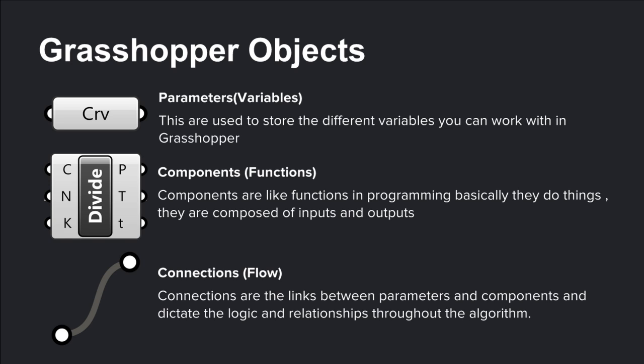The next one would be the components, which could be understood as functions, meaning they perform different operations. They are composed of a series of inputs which are computed to return an output. And finally we have the connections, which in the analogies we are making could be understood as the flow. The connections are the links between parameters and components and dictate the logic and relationships throughout the algorithm.